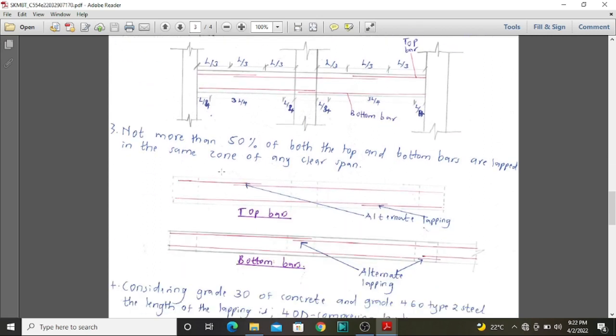Thirdly, not more than 50% of both top and bottom bars are supposed to be lapped in the same zone of any clear span. If this was our top view of our top bars, they are supposed to be lapped at different sections, and this is called alternate lapping, as observed also in the bottom bars.